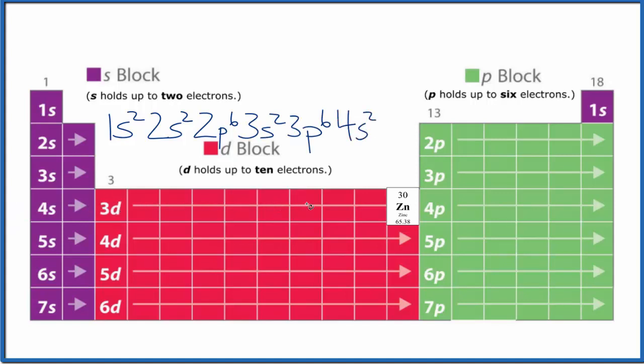3d: 1, 2, 3, 4, 5, 6, 7, 8, 9, 10. So 3d10. Often for these transition metals you'll see the 4s put after the 3d10. So let's write the orbital diagram for zinc now that we have the configuration.